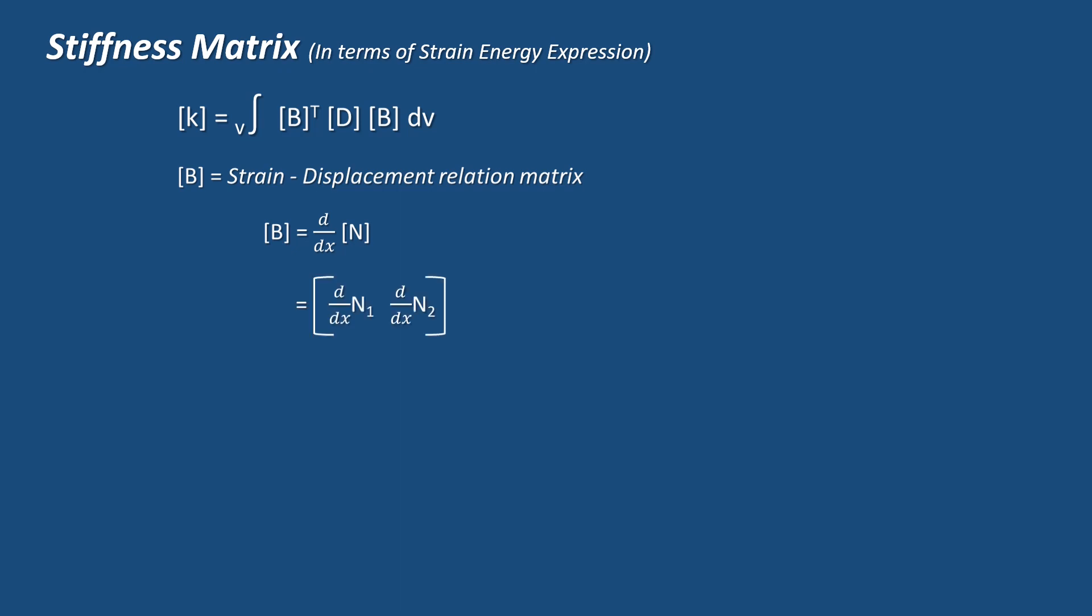For two noded element, matrix d by dx of N1 and d by dx of N2. Shape function N1 is 1 minus x by L. So derivative of N1 with respect to x is minus 1 by L. Derivative of N2 with respect to x is 1 by L.